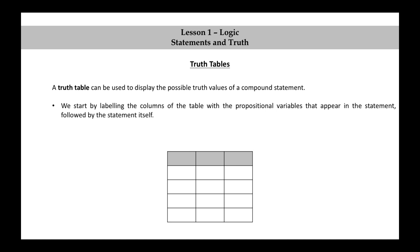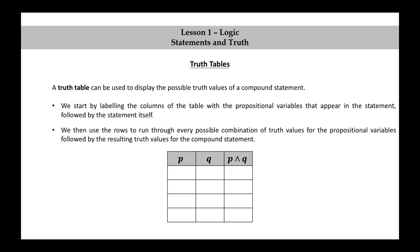So we'll need a column for P, a column for Q, and a column for the compound statement P∧Q. We then use the rows to run through every possible combination of truth values for the propositional variables, followed by the resulting truth values for the compound statement. For the truth assignment that assigns true to both P and Q, the result is that P∧Q is true.